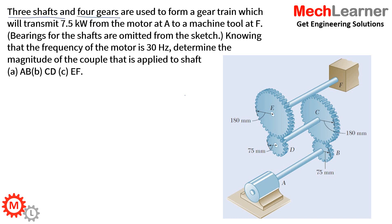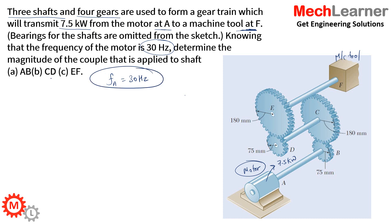In this question, three shafts and four gears are used to form a gear train which will transmit 7.5 kilowatts from the motor at A to a machine tool at F. The motor transmits 7.5 kilowatt power and the machine consumes 7.5 kilowatt power. The frequency of the motor is 30 hertz. We have to determine the magnitude of the couple applied to shafts AB, CD, and EF — that is, Tau_AB, Tau_CD, and Tau_EF.